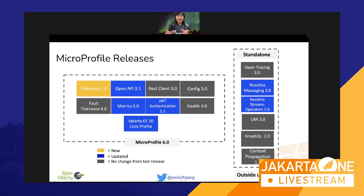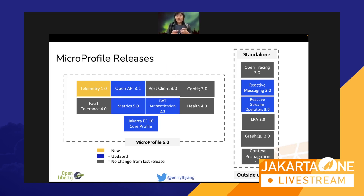You can see the updated specifications: OpenAPI 3.1, JWT Authentication 2.1, and Metrics. The new one highlighted in yellow is called MicroProfile Telemetry — this is the new spec replacing MicroProfile OpenTracing. OpenTracing has been moved to standalone because it's no longer strategic. I'll discuss MicroProfile Telemetry more later.